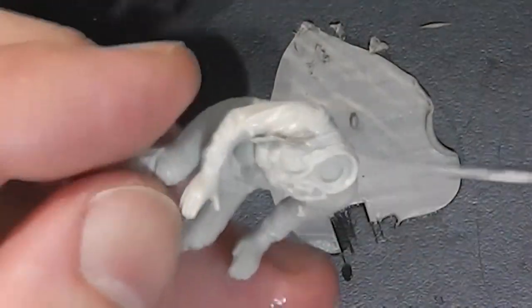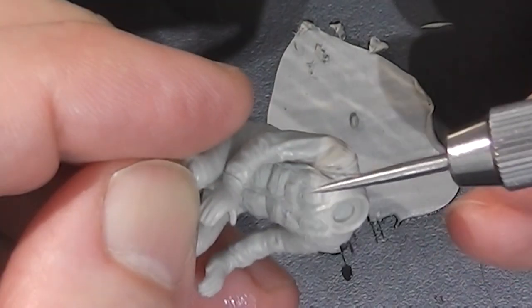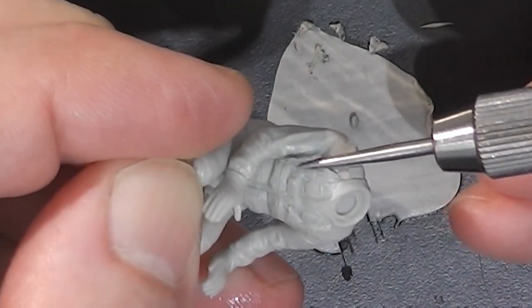The arm joint on both Pine and Bob were dressed with epoxy putty and shaped to match the wrinkles of the flight suit with a wet tool.